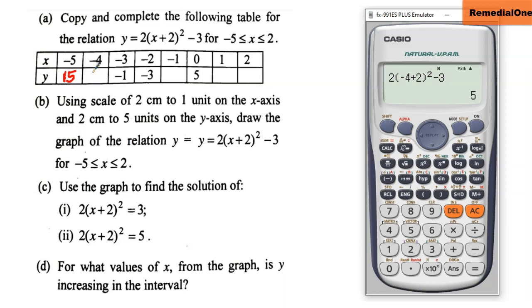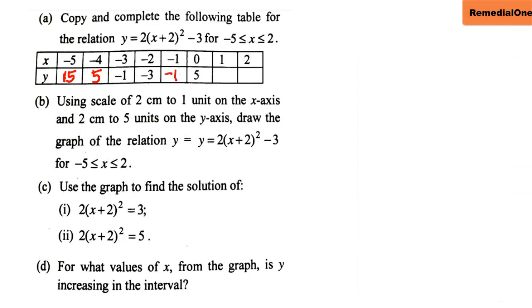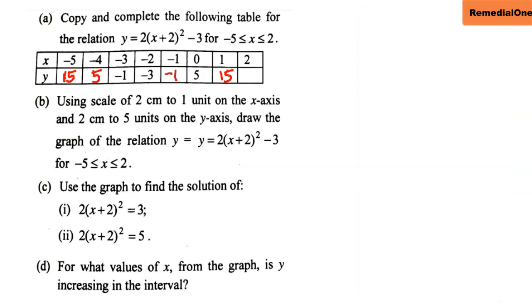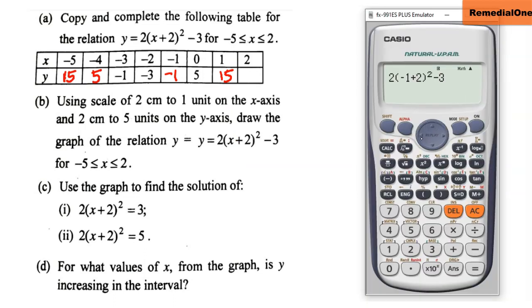If you want to go with speed, just grab the calculator, delete the previous x value, and replace it. Replace with -3 and you get -1. Grab the calculator again, delete and enter -1, and you get 1. Last one — change to 2 and you get 29.